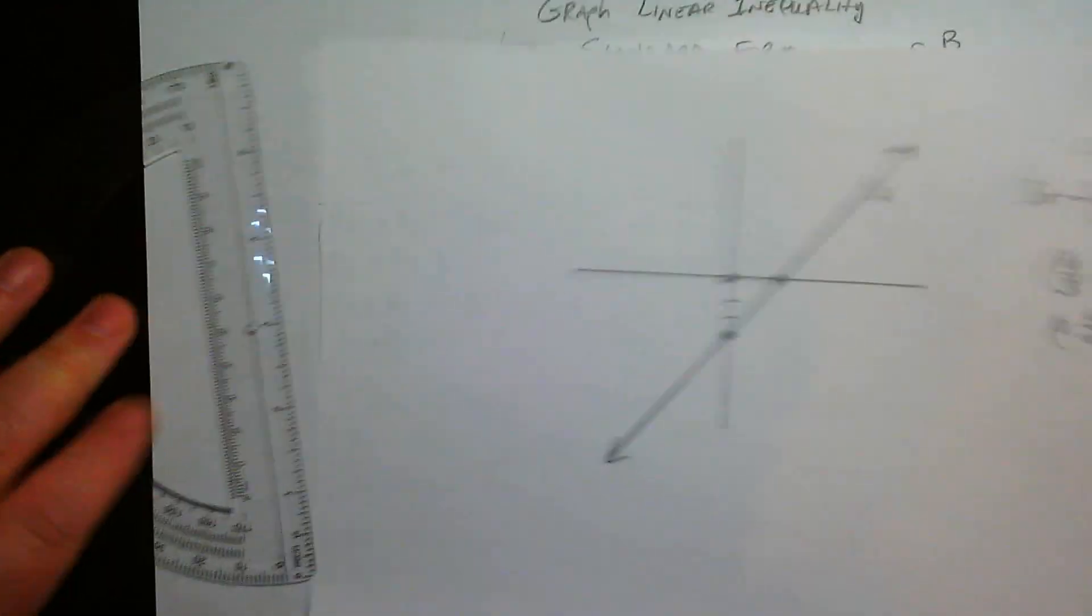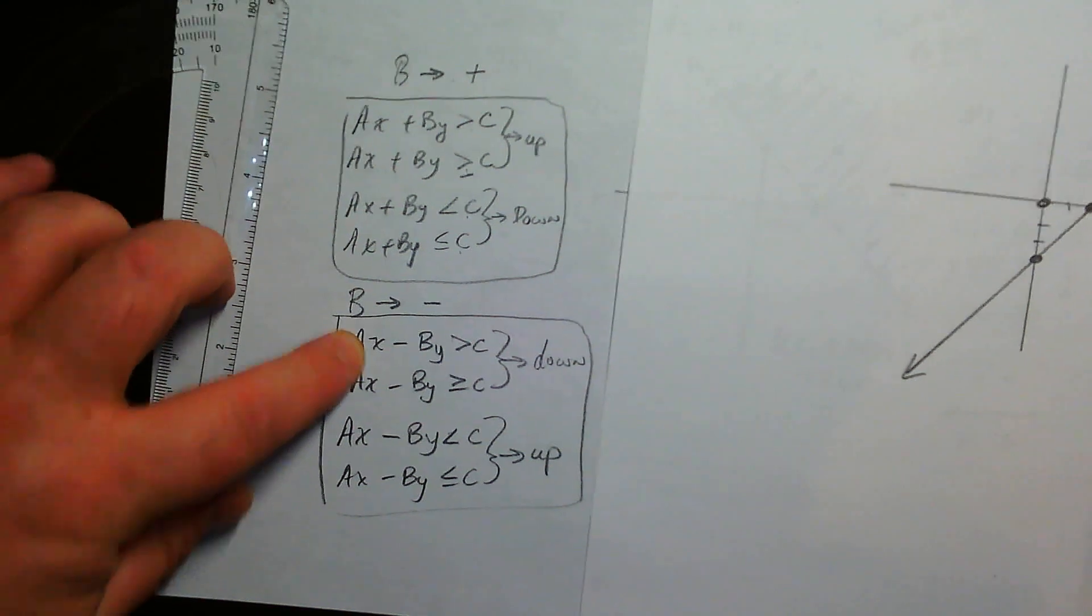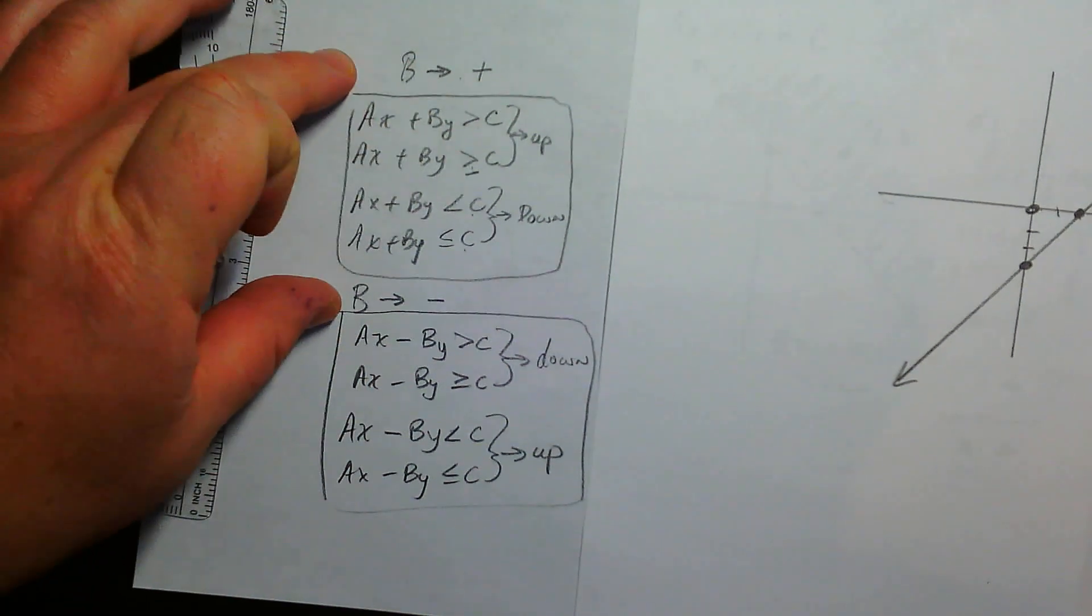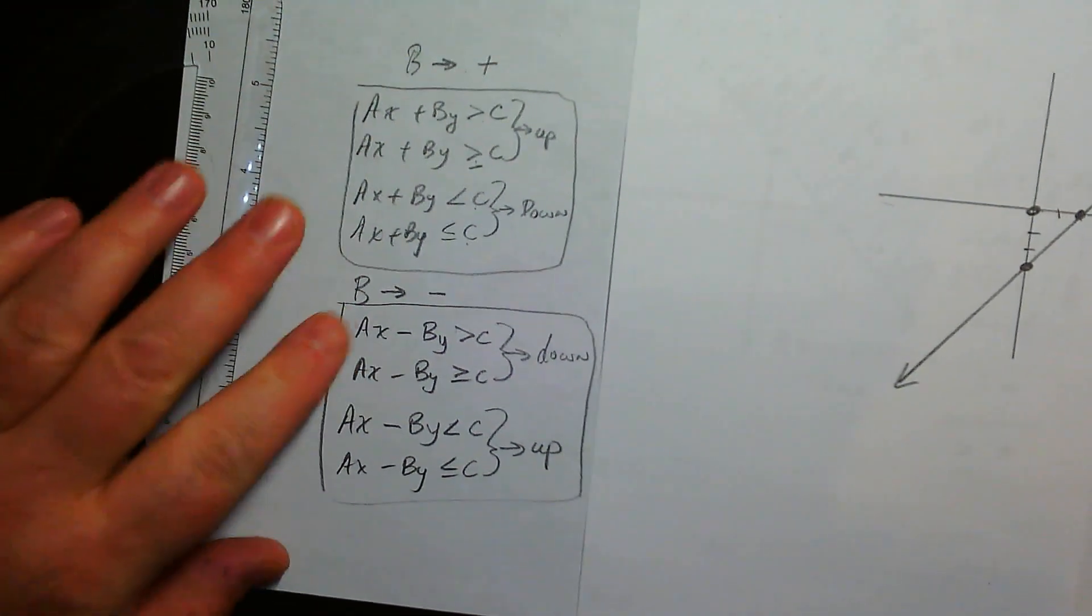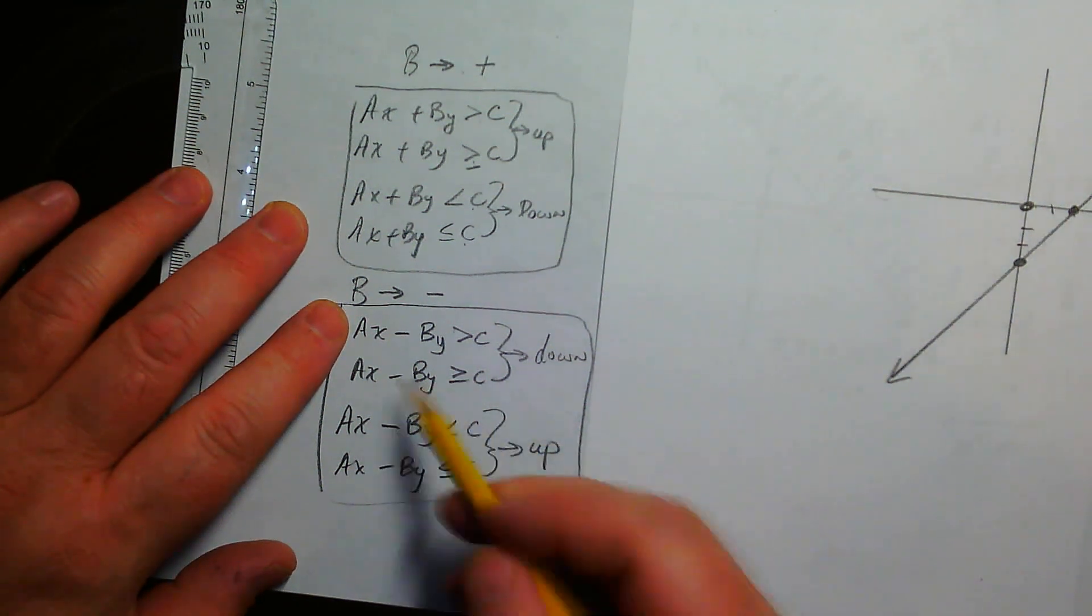But a lot of the time, that's a little, I don't know. Again, some people like to do this instead. So here we have B is negative. Here we have B is positive. This is the key. B is negative. That's our key. If B is negative and we have a greater sign, it's going to be going down. Negative means opposite.